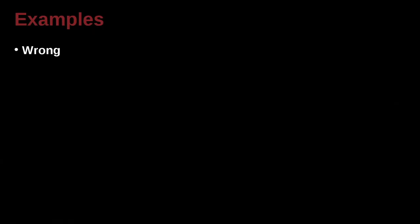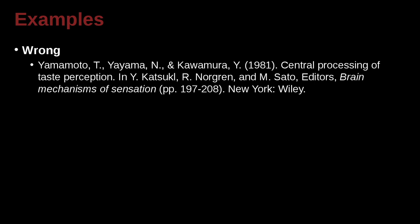Don't ask me why, because it's not a good answer. Yamamoto, T — last name first, first name last — Yayama, N, Kawamora, Y. And remember, there's that ampersand there — that's very good. We're gonna be using the ampersand in the reference list. We've got our year here inside of parentheses.